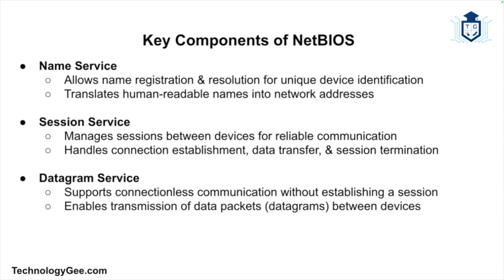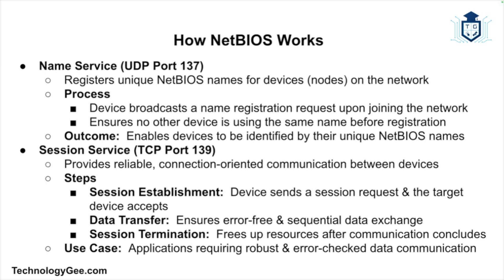NetBIOS provides three main types of services. The first is the Name Service, which allows for name registration and resolution — each device on the network must register its name with the NetBIOS Name Service to be identified uniquely, and name resolution translates human-readable names into network addresses. The second is the Session Service, which is responsible for establishing and managing sessions between network devices, handling connection establishment, data transfer, and session termination. The third is the Datagram Service, which facilitates connectionless communication — unlike the session service, it does not establish a session but allows for the transmission of data packets between devices.